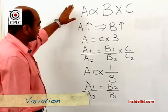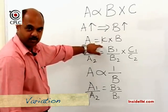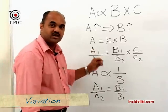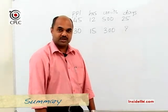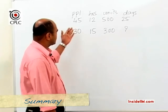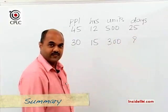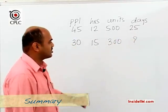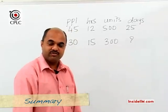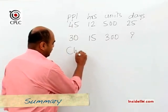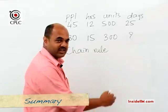Whether it is direct or inverse variation, questions can be solved directly without calculating the constant of proportionality, saving an extra calculation step. Now that we've gone through the concepts of ratios and variation, let's go back to the original example: 45 people working 12 hours a day complete 500 units of work in 25 days; with 30 people working 15 hours a day to complete 300 units, how many days are required? We will solve this using what is commonly known as the chain rule.